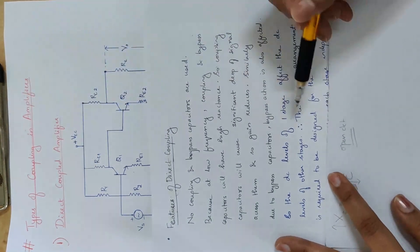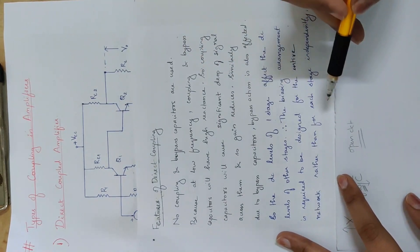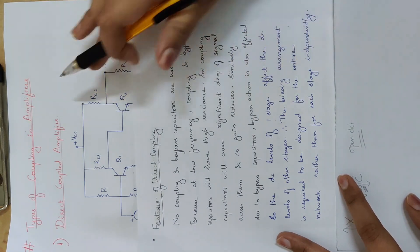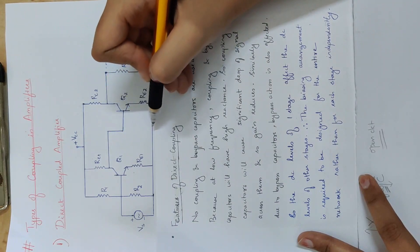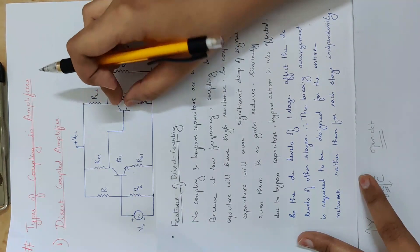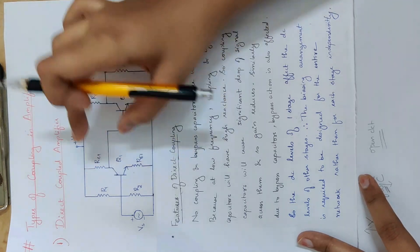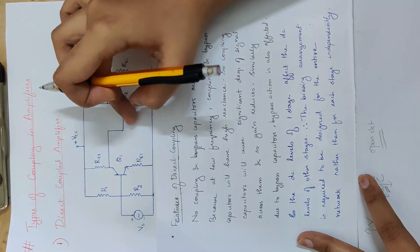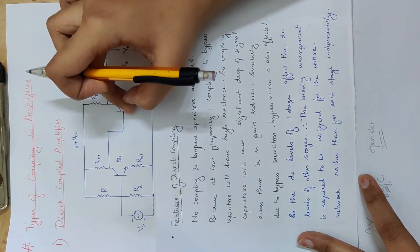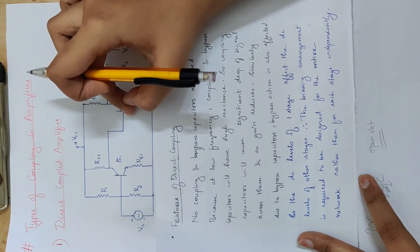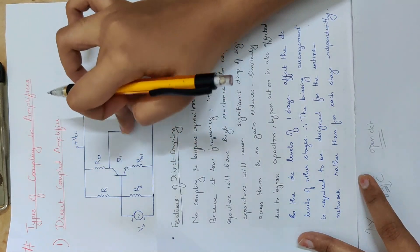So the biasing arrangement is required to be designed for the entire network rather than for each stage independently. Separately, we use R1 and R2 for each transistor with voltage divider biasing.